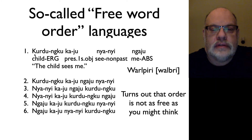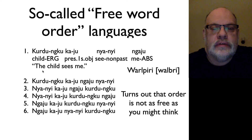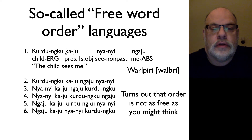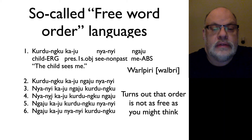We have a sentence like 'the child sees me' here, but in fact the words can appear in pretty much any order. However, there is one restriction, which is the auxiliary verb — the kaju here — has to be in the second position.